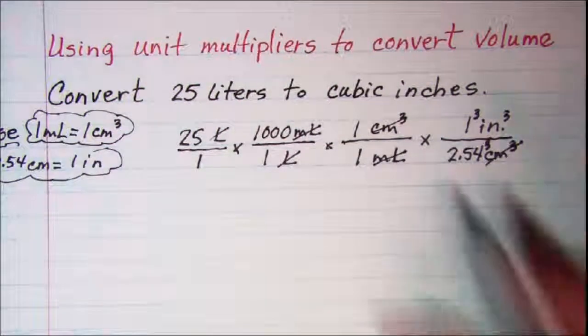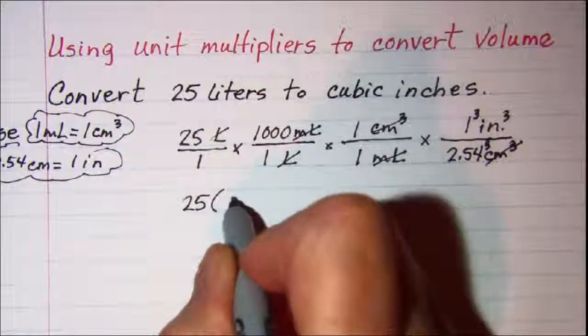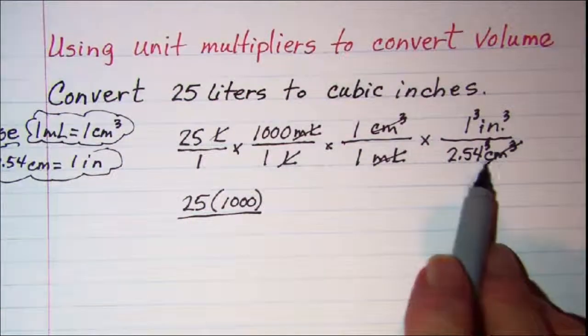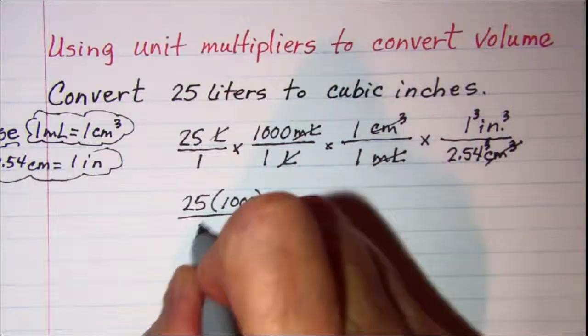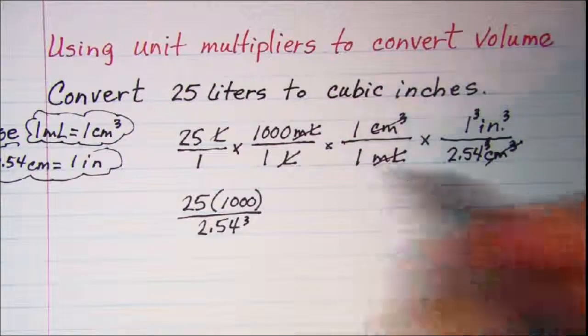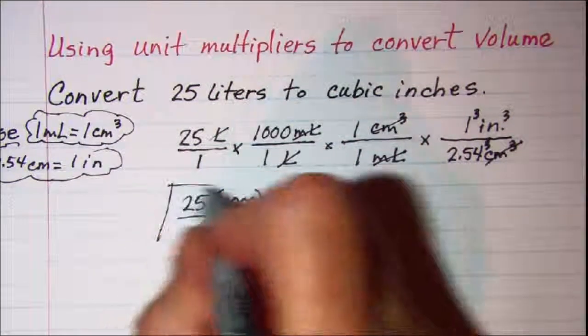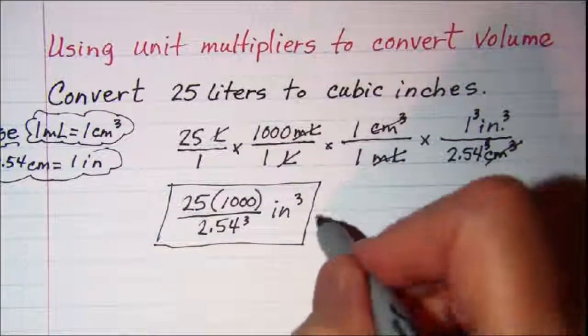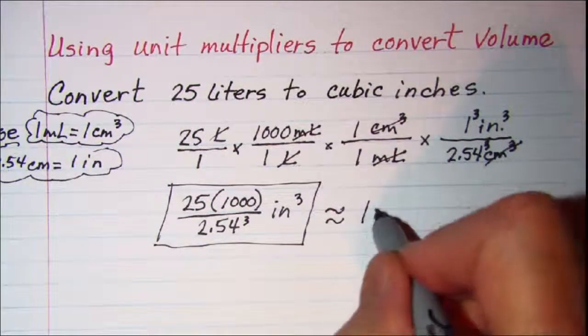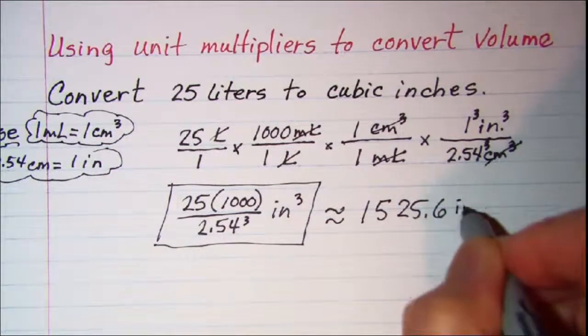So this is my answer. I am going to write it first with all the factors showing: 25 times 1,000 divided by 2.54 cubed. Make sure you get that cubed on there and that is inches cubed. So this is my answer. And when I put that in my calculator it comes out to be approximately 1,525.6 cubic inches.